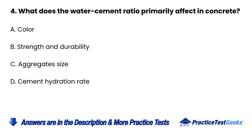Question 4. What does the water-cement ratio primarily affect in concrete? A. Color. B. Strength and durability. C. Aggregate size. D. Cement hydration rate.